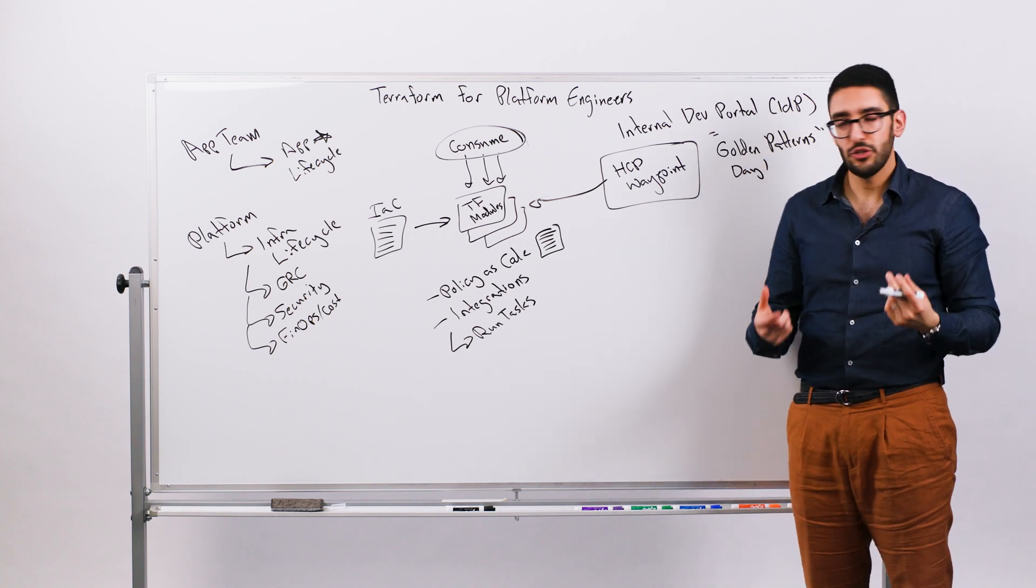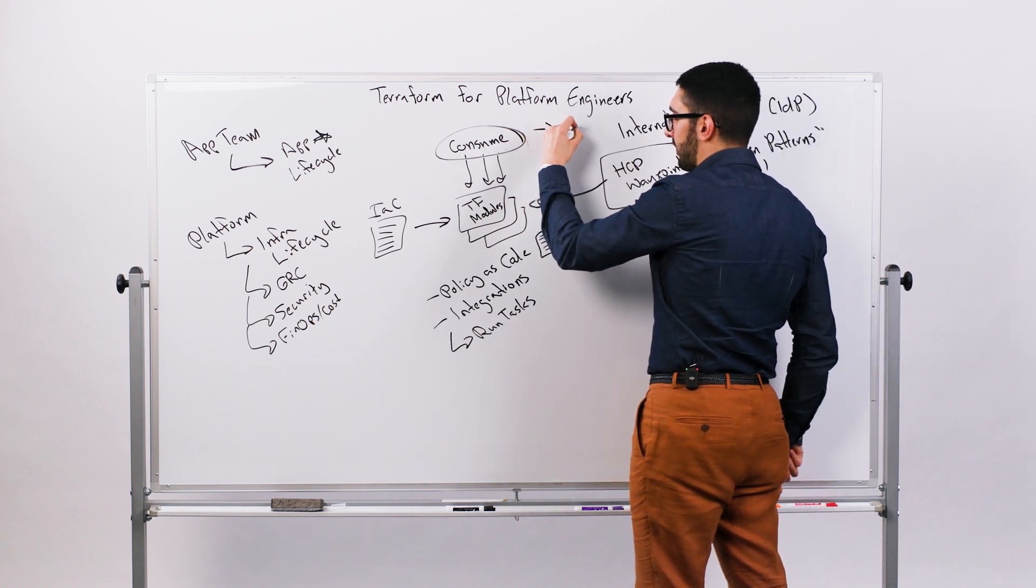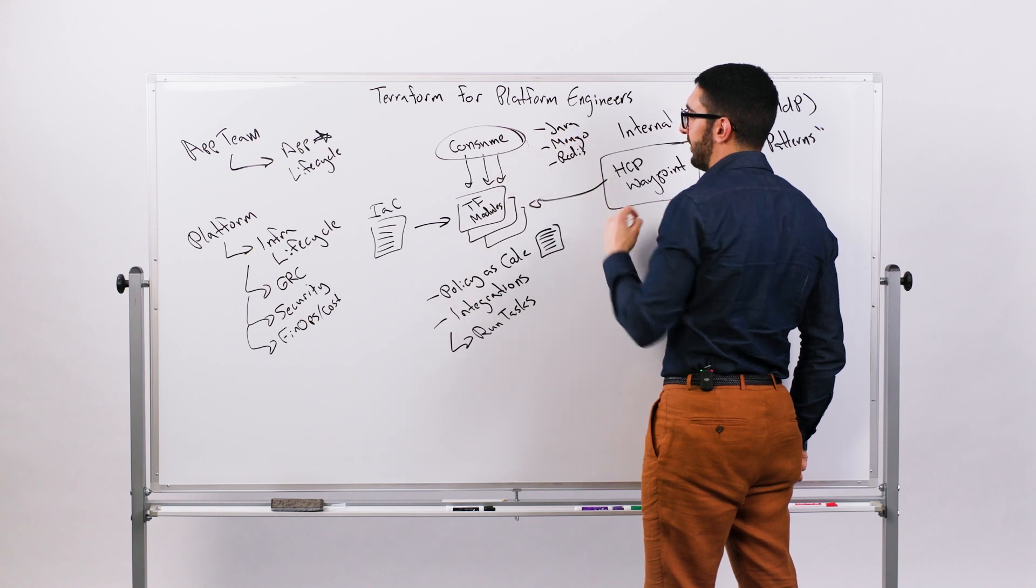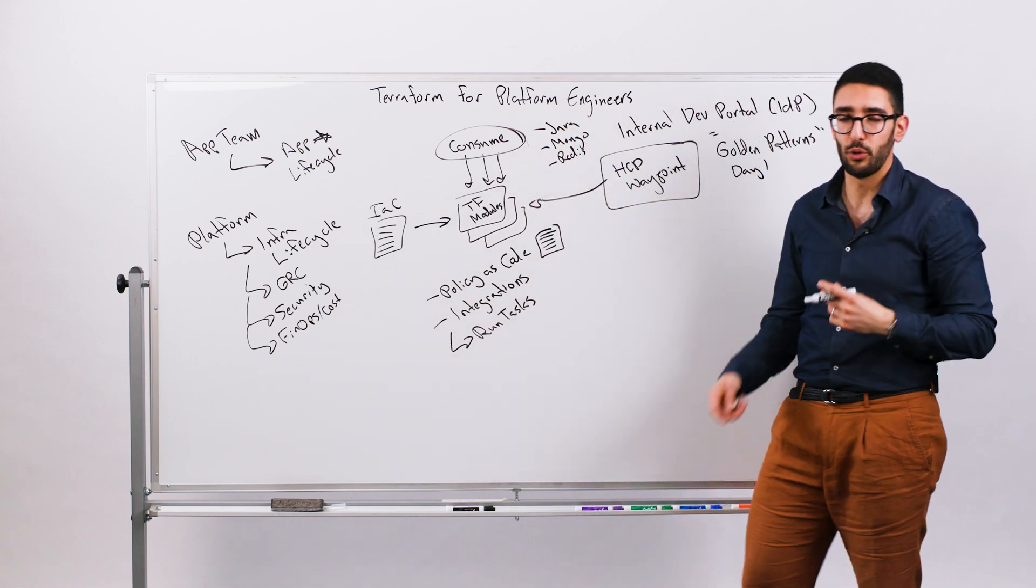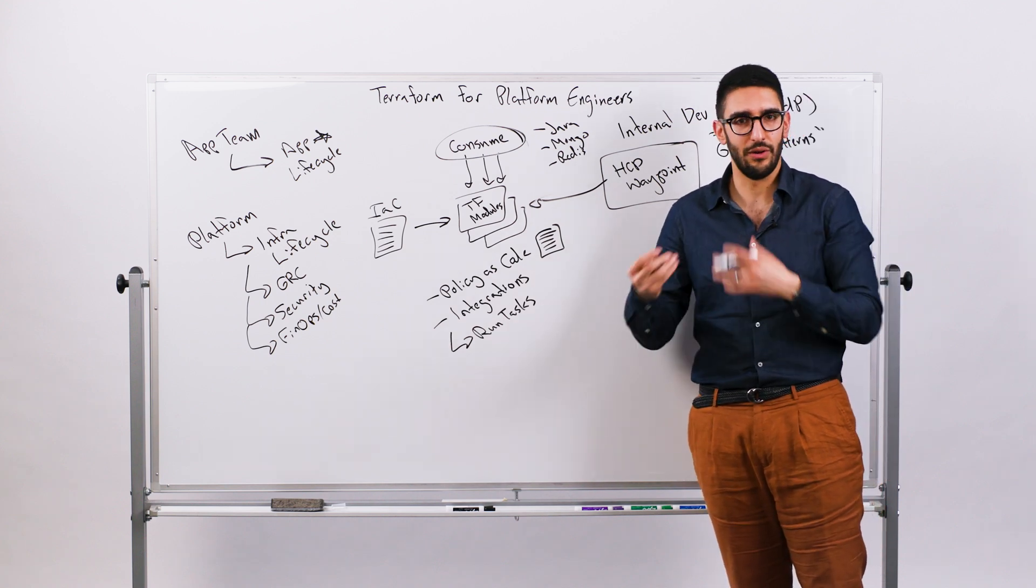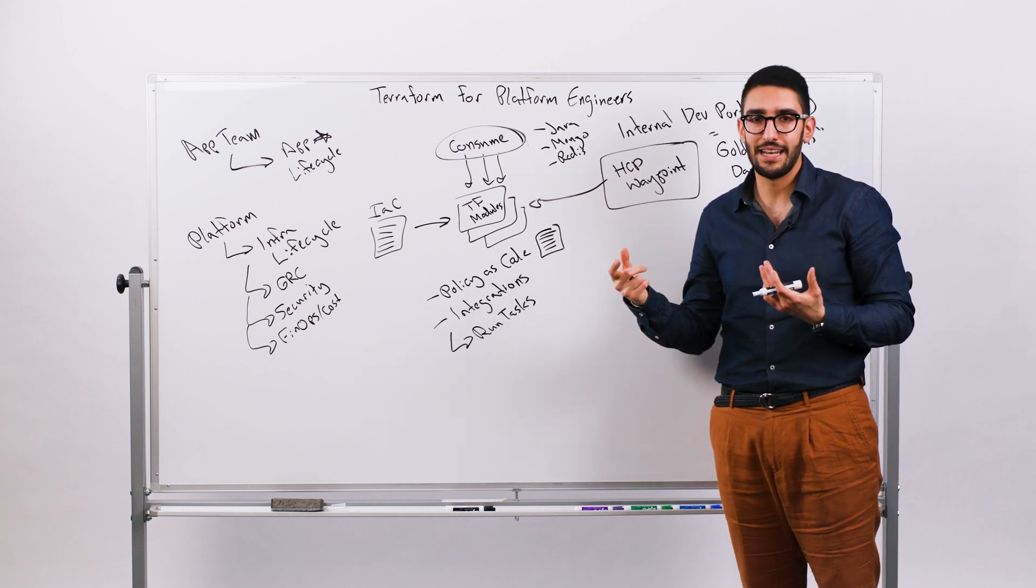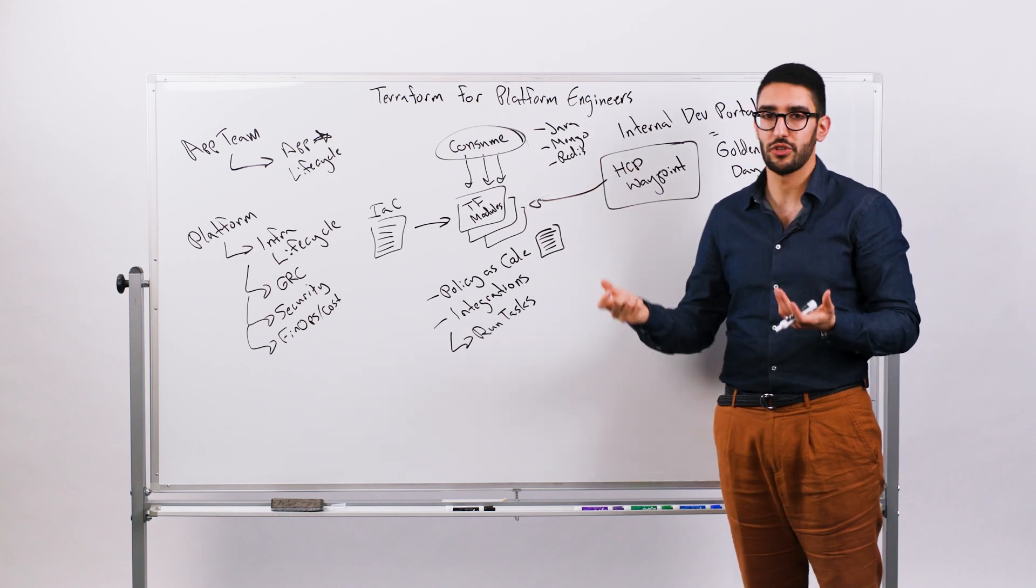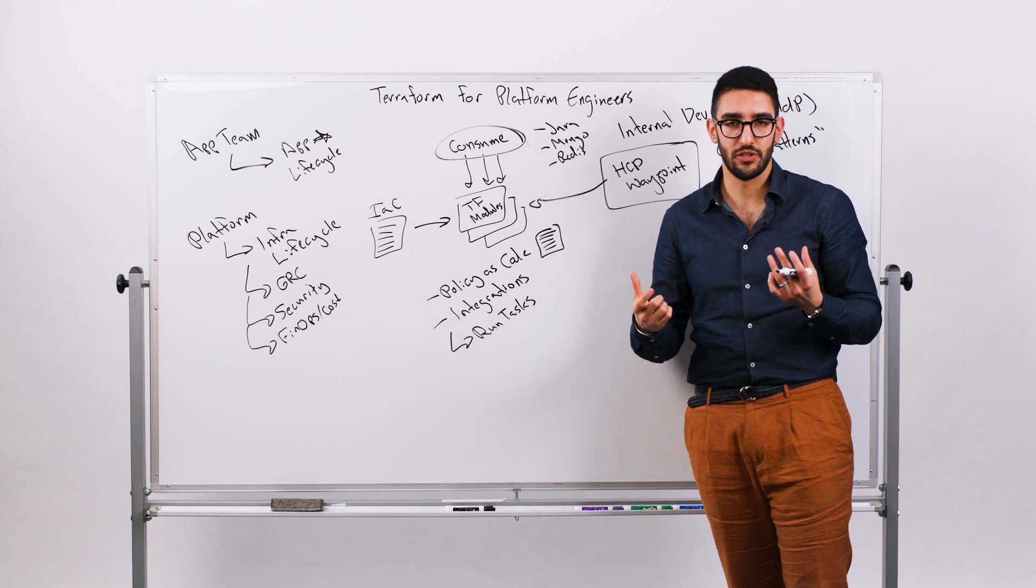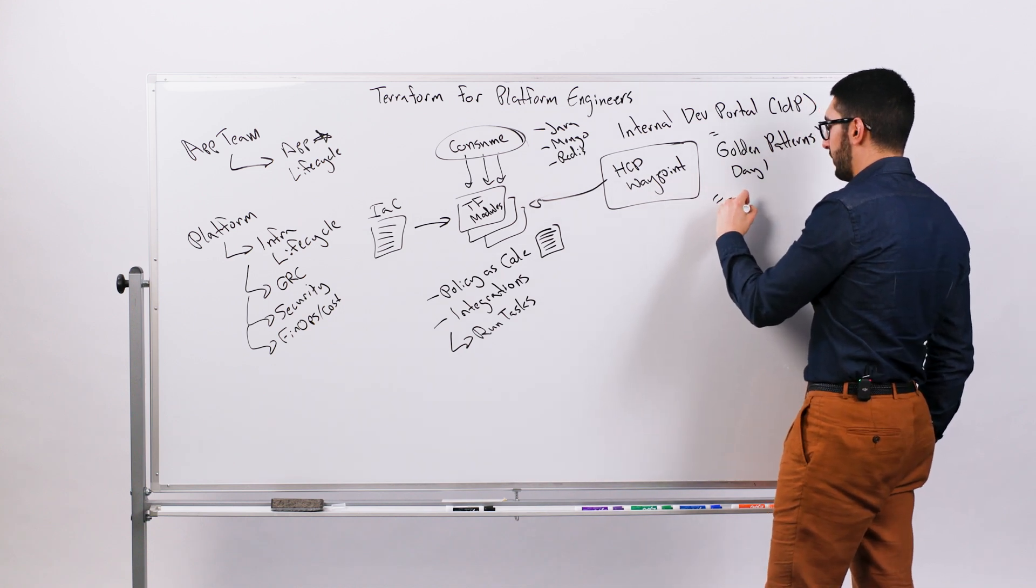But then you get to the day two challenge, which is great just because I've defined some infrastructure, maybe my Java app, I have my Mongo cluster, I have Redis. I still have a set of day two challenges, which is I have to deploy a new version of this Java app. I've deployed version one, but now my development team wants to push version two. So how do I build a new version? How do I deploy it? How do I manage that lifecycle? Maybe I need to create an index in my Mongo cluster. Maybe I need to purge the cache within Redis. So there's a set of these sort of run books or day two actions that somehow need to be exposed as well. So we refer to that as a set of golden workflows.